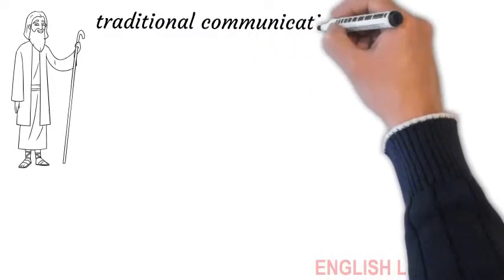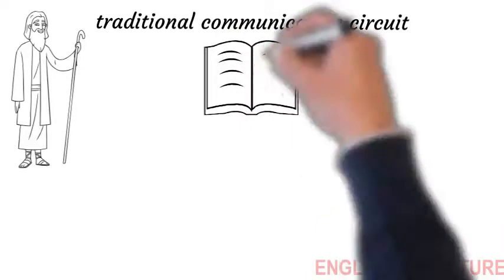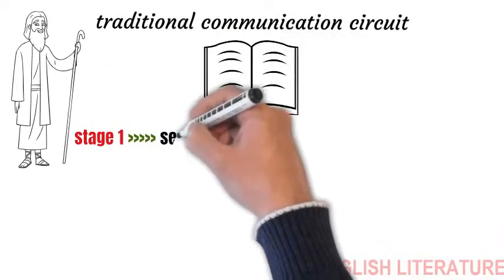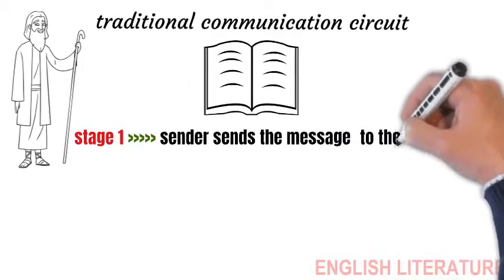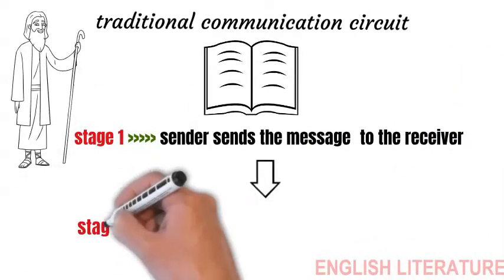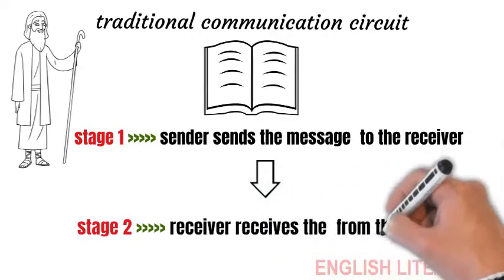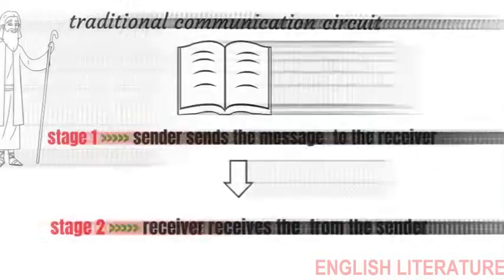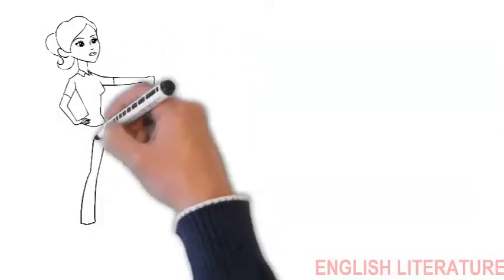The earlier research was dogged by the traditional communication circuit which recognized only two stages. Stage 1: The sender sends the message. Stage 2: The receiver receives the message. This model of communication was very much linear, where the message flowed from one side to the other, from sender to receiver.